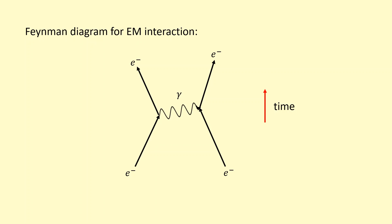I could have done this with any charge, really. I could have done this, for example, with protons repelling each other. And I could have done this even with attraction — I would still represent it like this. Since the x-axis doesn't really represent space, even though they should be attracting each other, I could still represent the interaction between something positive and negative like this. I could have done antiparticles as well — anything that's charged. This wouldn't occur with neutrons, for example, because neutrons aren't charged.